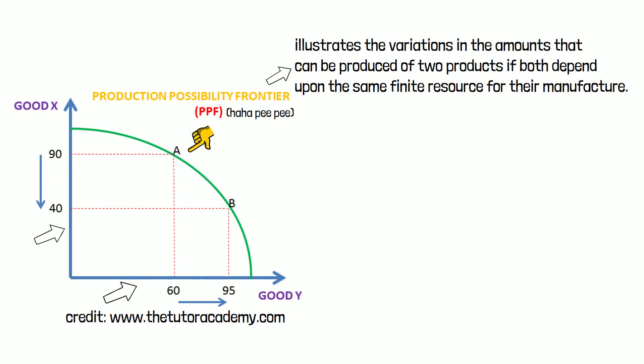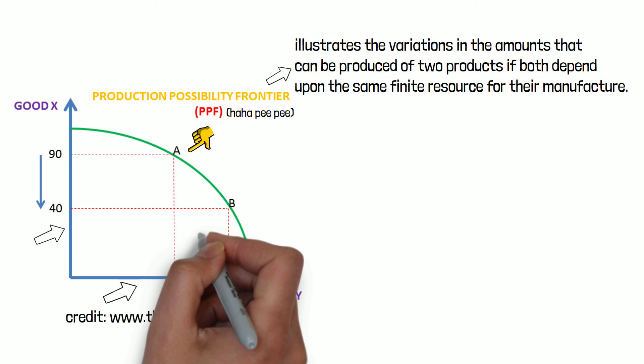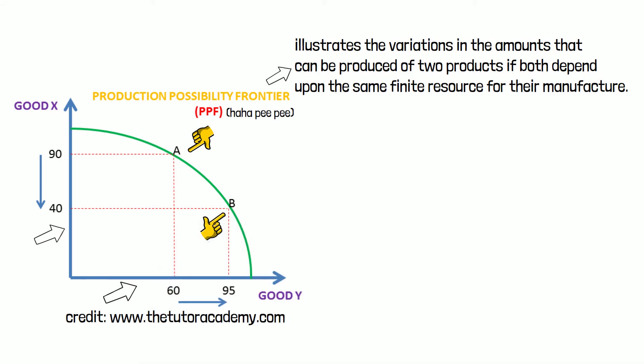Notice that at point A you produce 90X and 60Y, but if you move along the curve to point B, you can now produce less of X and more of Y. In other words, there is a trade-off between producing one good or the other. Producing more of one good means producing less of another.